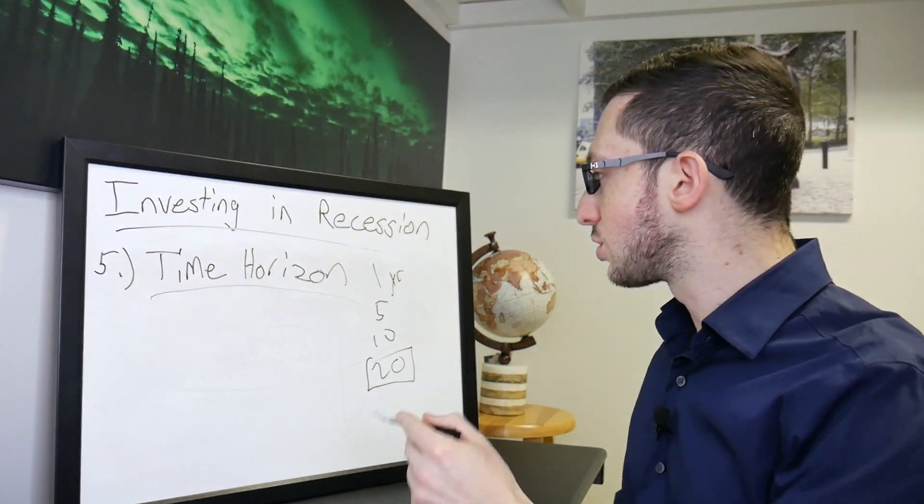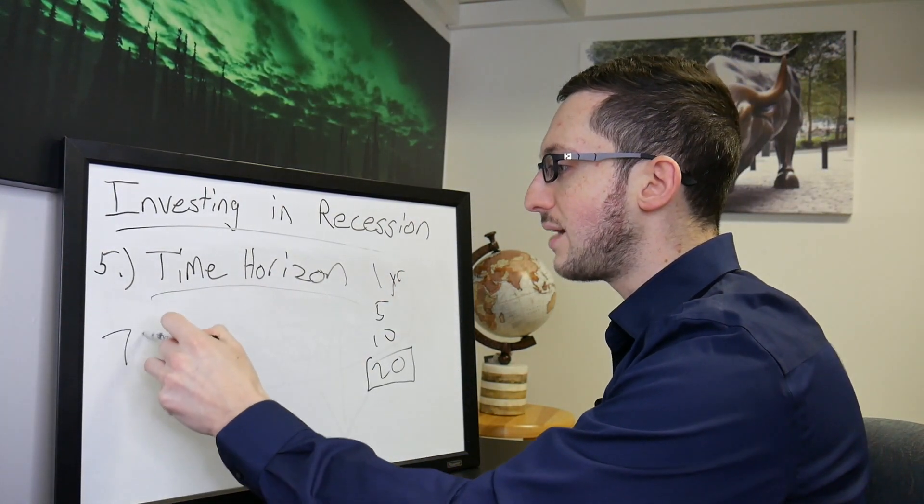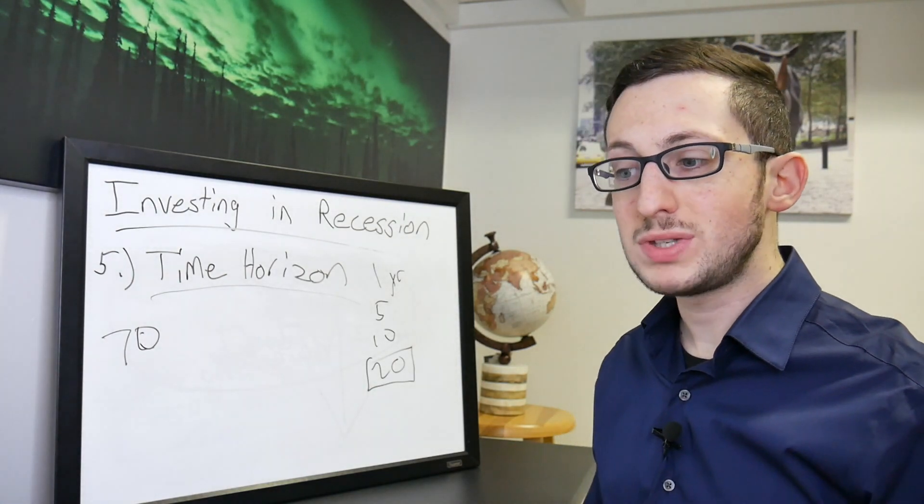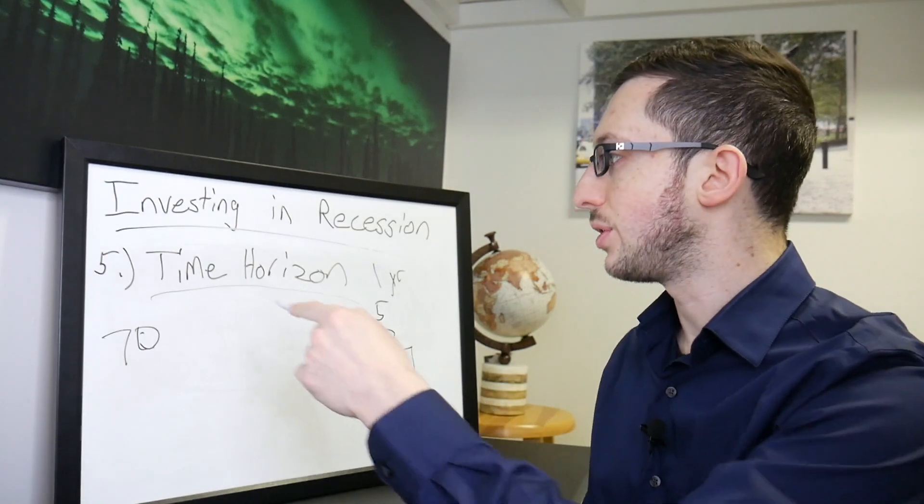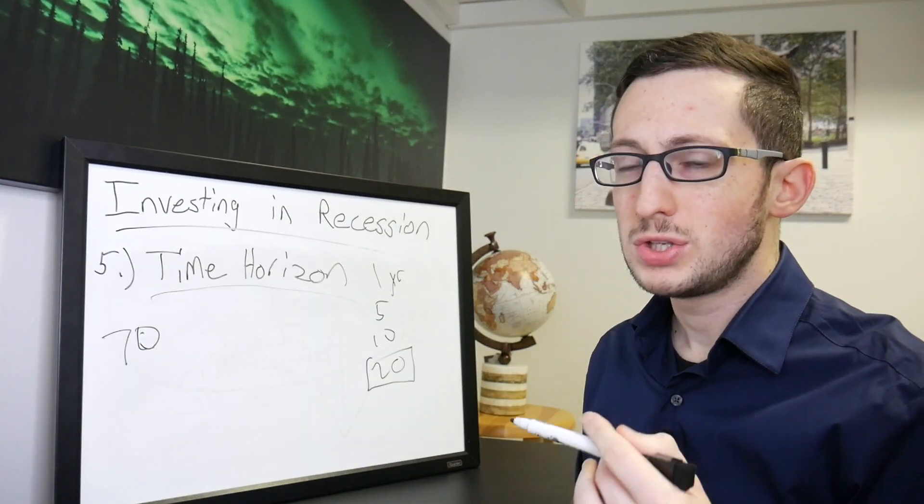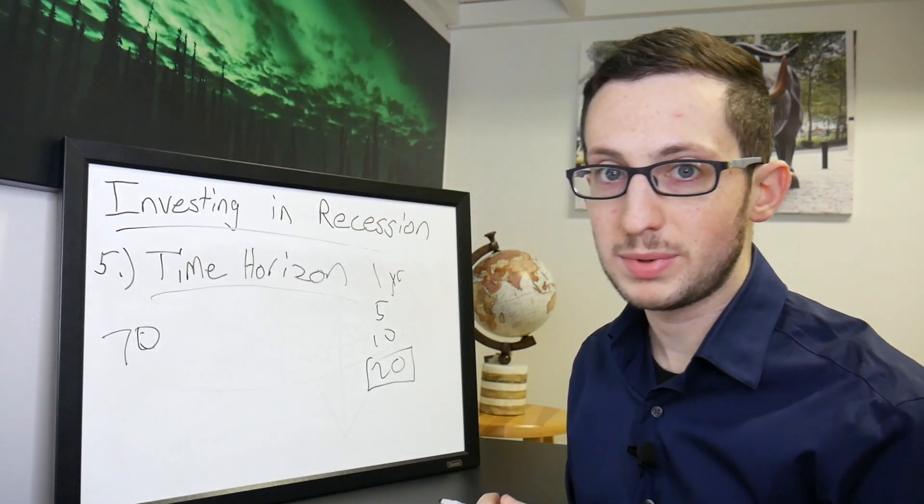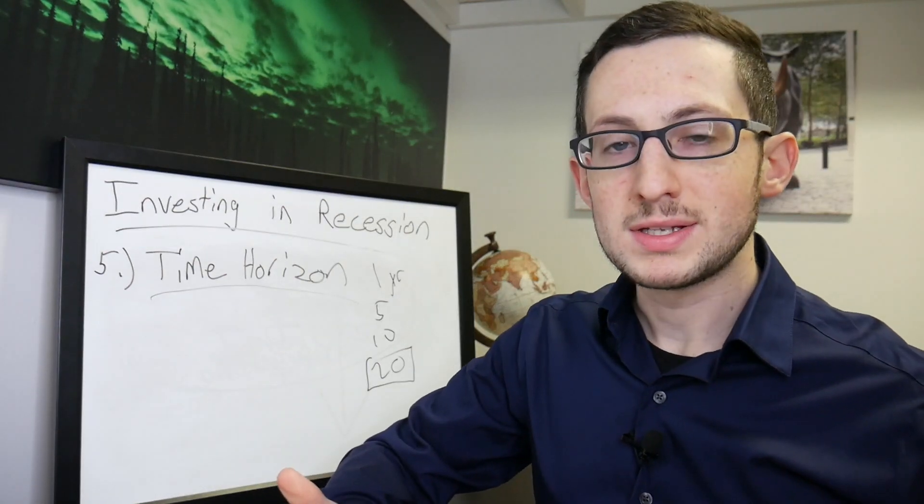But when you're closer to retirement, maybe if you're 70, you don't have that type of time horizon. So you need less risk. If you're 20 years old you have that great time horizon, you could kind of hold off a little bit longer, hold these stocks.